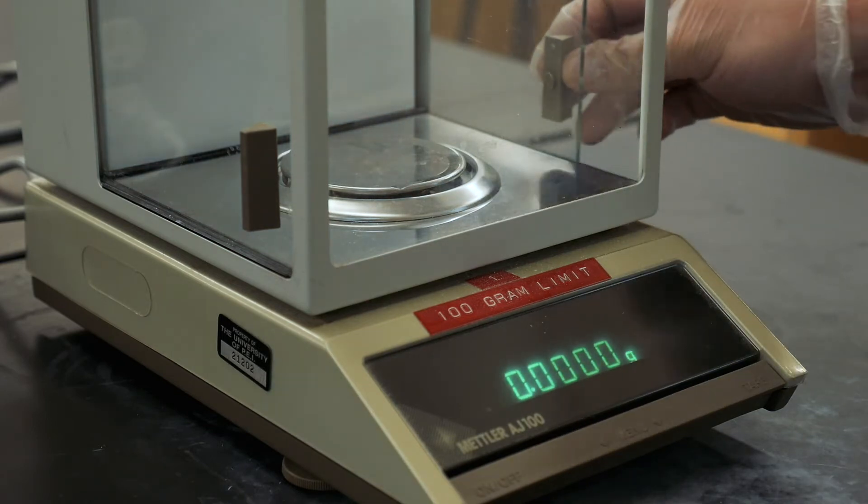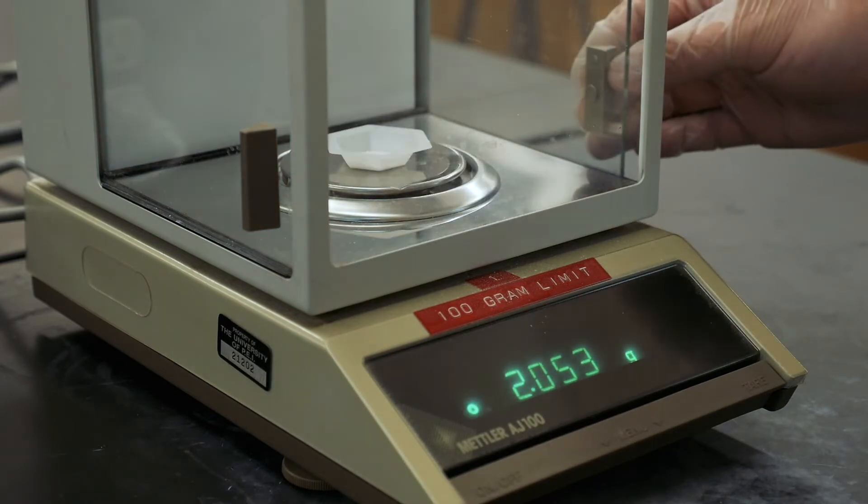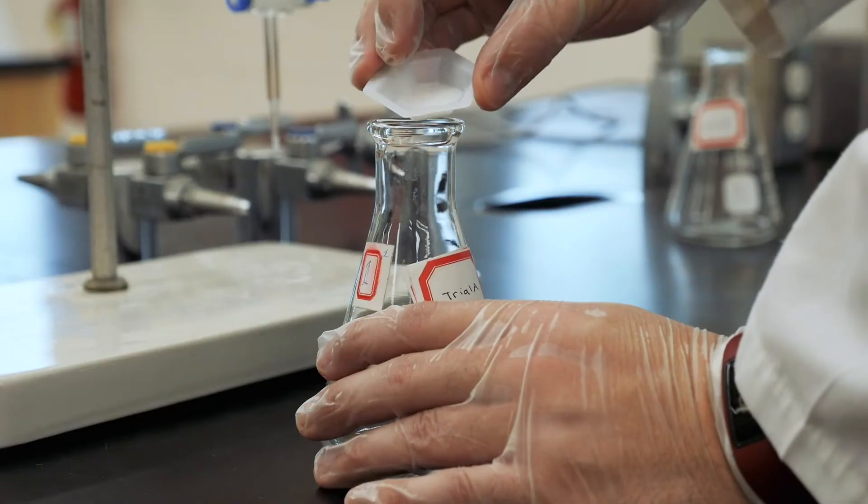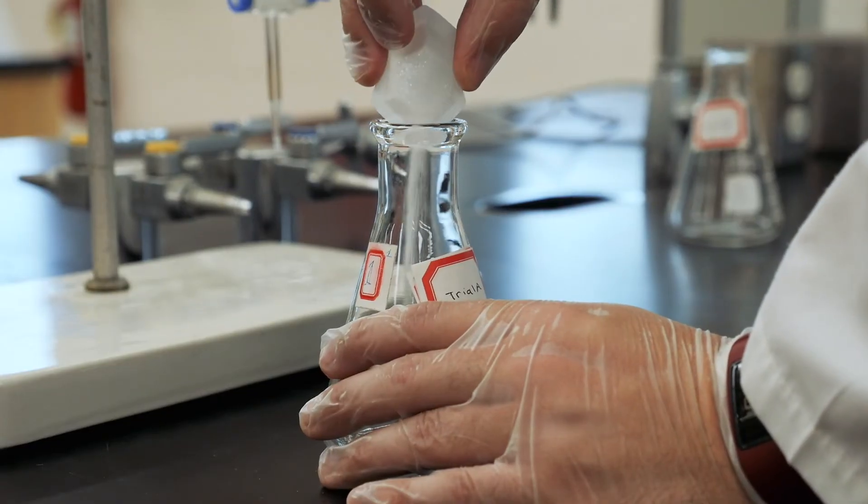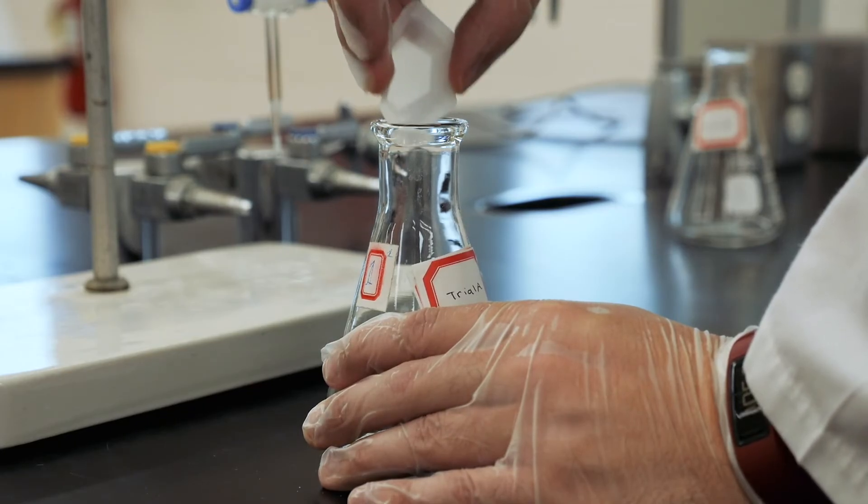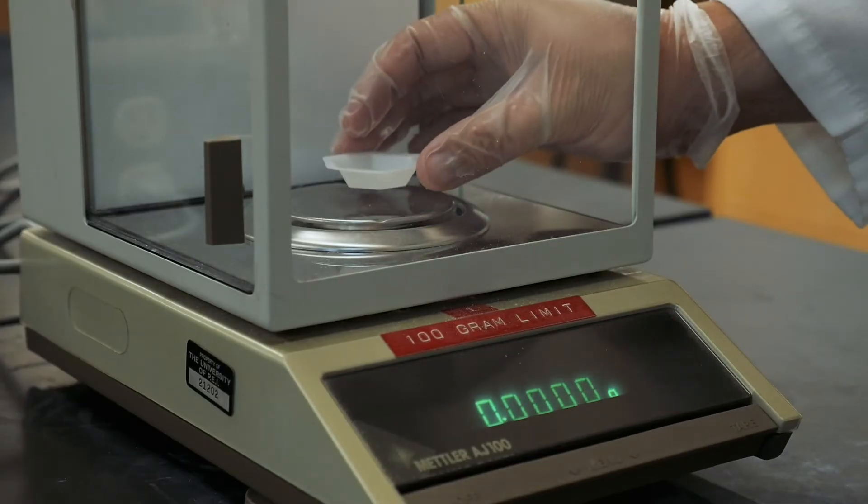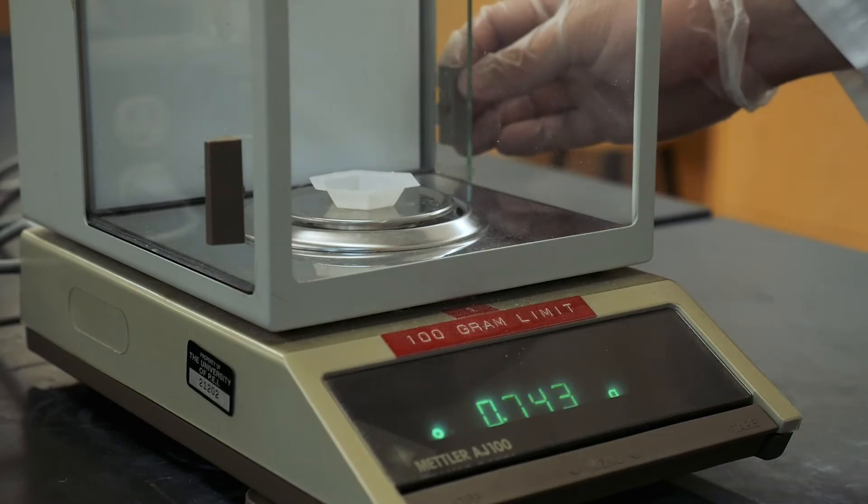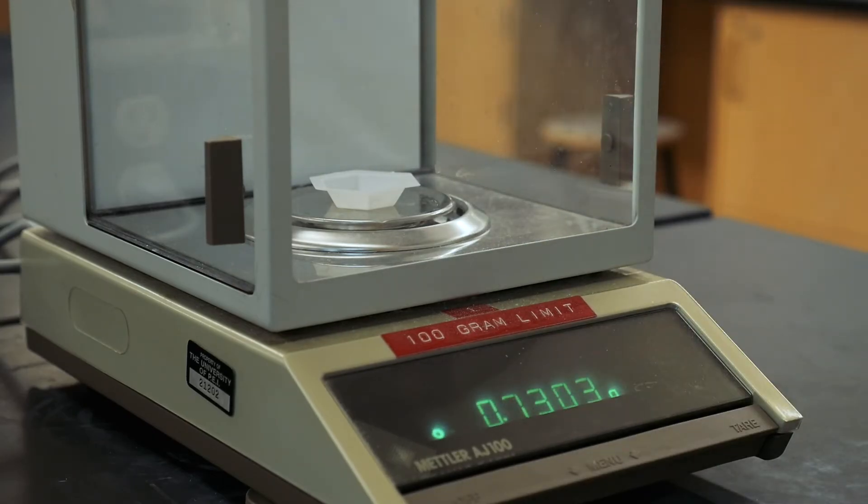Now you can transfer the entire sample to a clean 250 mL Erlenmeyer flask. At this point, re-weigh the empty weighing dish. From the difference in mass, you can determine the mass of KHP which has actually been transferred to the Erlenmeyer. This accounts for any microscopic amount of KHP that might have adhered to the dish.